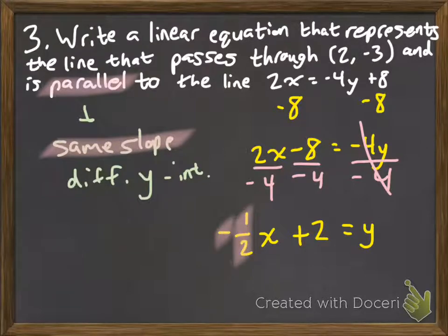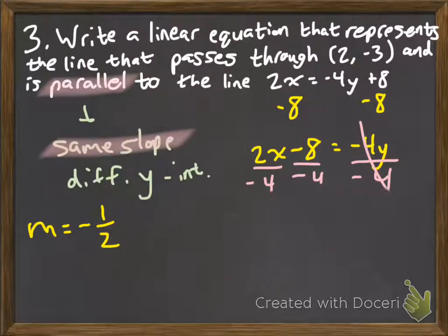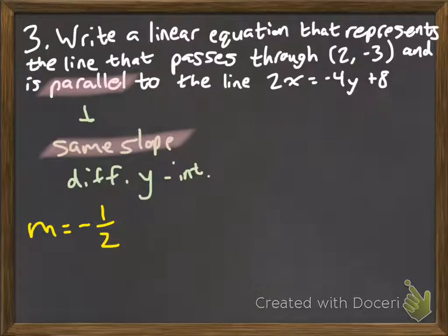We know that the coefficient of x is the slope. So we've used our initial information to get the slope, which is called m, is negative 1 half. So now we're done with that other line. We don't need to look at that other line anymore. Now we're moving on to the next piece of information. Parallel to that, that means get the slope from that line.